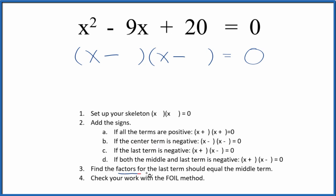Now we find the factors for the last term. That's the 20 here. And those factors should equal the middle term. So if I think of 20, I could say 1 times 20, that won't do it. 2 times 10, it's close. And 4 times 5.